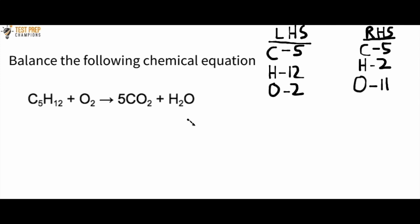Before we jump into the question, understand the rules of the game: coefficients out front you can change; subscripts — those little numbers — you cannot. I don't even care if you remember those terms, just remember which numbers you can and can't change. Now, starting the balancing: we see we have 12 hydrogens on the left-hand side and only two on the right-hand side in H2O.